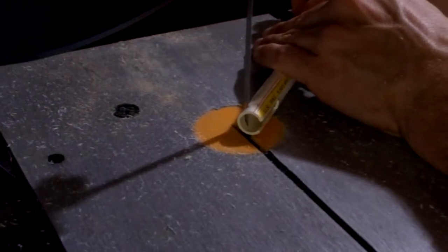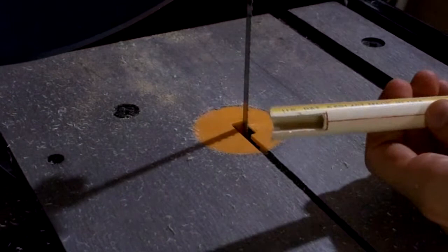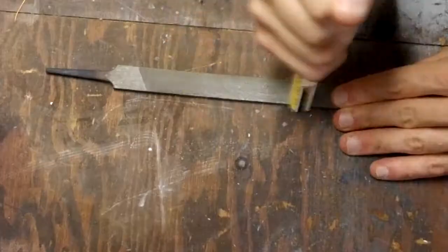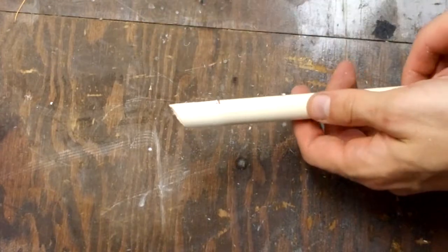Now we need to cut another 45 degree angle on this piece. It doesn't have to perfectly match the other one, but get it close if you can. Now let's smooth it out. And it should look like this.